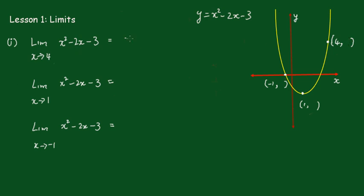We'll put in 4 for x and we get 4 squared minus 2 times 4 minus 3, which is 16 minus 8 minus 3, which gives the result of 5. So this is just a simple matter of substituting that value in.